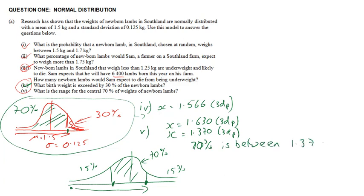So I know for 70% is between 1.37 and 1.63 kilograms. Okay, so I hope that makes sense. That's my inverse normal done. Do normal distribution again at level 3.